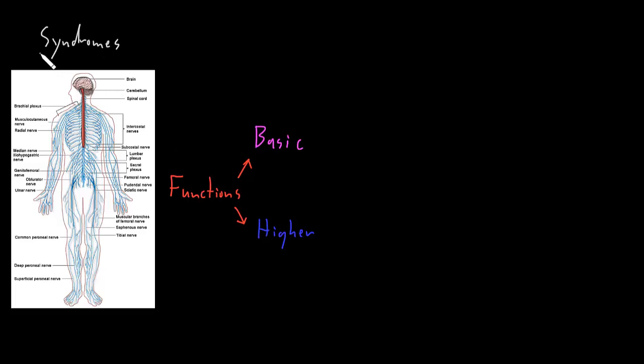The basic functions of the nervous system are performed by many parts of both the central nervous system, which is mainly the brain and the spinal cord, and the peripheral nervous system, which is mainly the nerves.